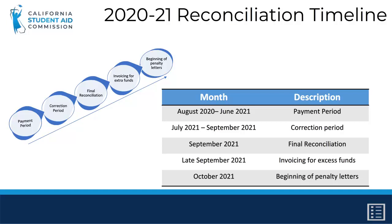In September, the Commission permanently closes the award year. After the award year has closed, the Commission sends out invoices to institutions that have Cal Grant monies left over. These funds are due back along with any interest accrued on them to the Commission. In October, those institutions who have not returned the excess funding to the Commission will receive penalty letters, which, if not paid, could result in the loss of future term advances, supplemental payments, or even termination of the institution's Cal Grant participation.